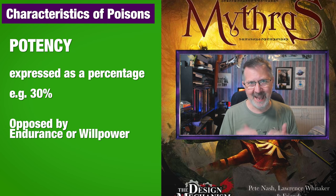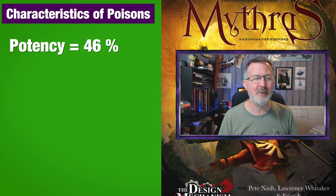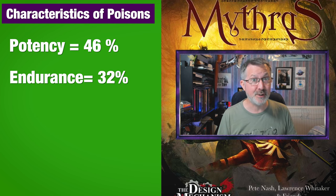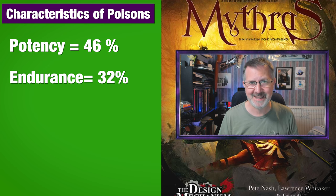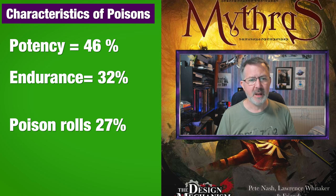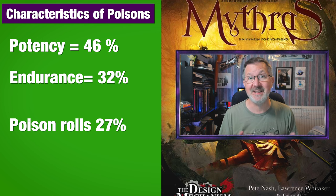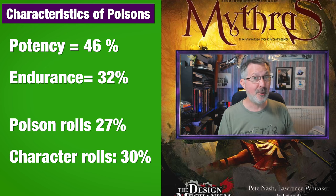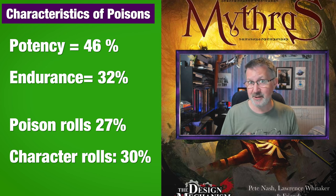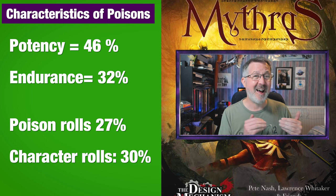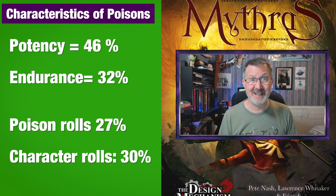Let me give you an example. Let's say the potency of the poison is 46 and a character has an Endurance of 32. Both roll: the poison gets 27, which is less than 46, so it's a success. But the character rolls 30, which is also a success because it's less than their Endurance of 32 — but it is higher than the poison's roll of 27. So the character resists it.